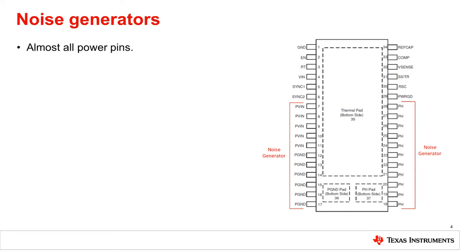Noise generating pins are almost always power pins, and that is shown in the pins labeled on the right. The power ground, power voltage input, and power output are all noise generators on the TPS7H4001-SP. These are the pins that will create the most switching noise in the circuit, and thus sensitive signals should avoid traveling close to these.